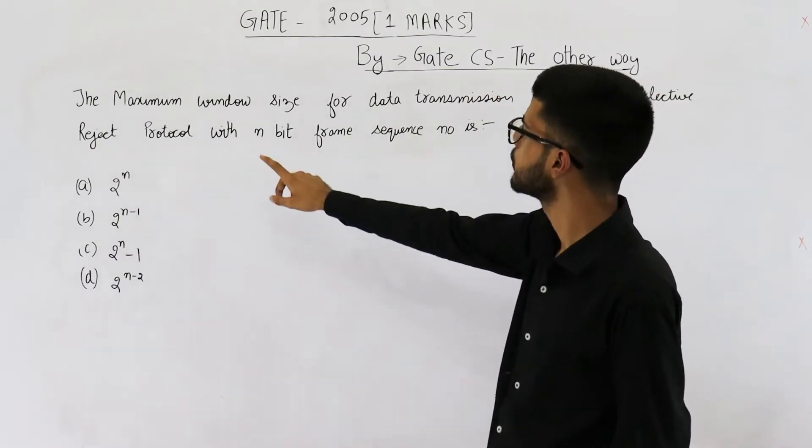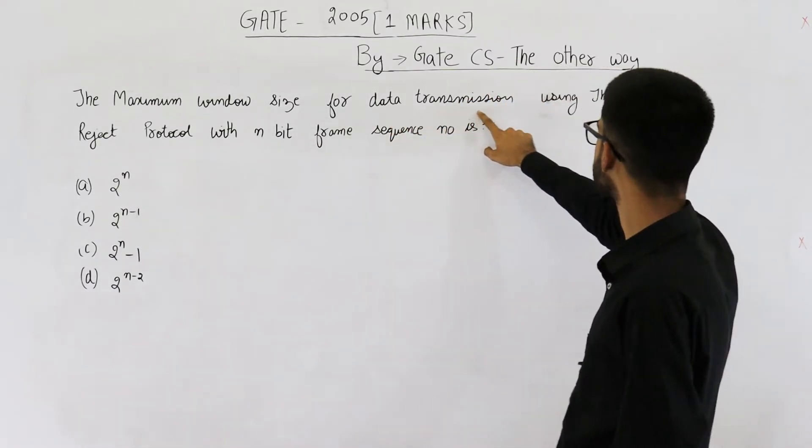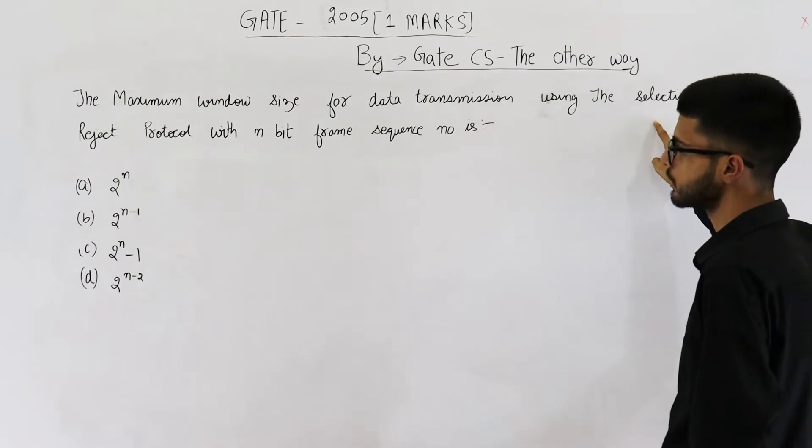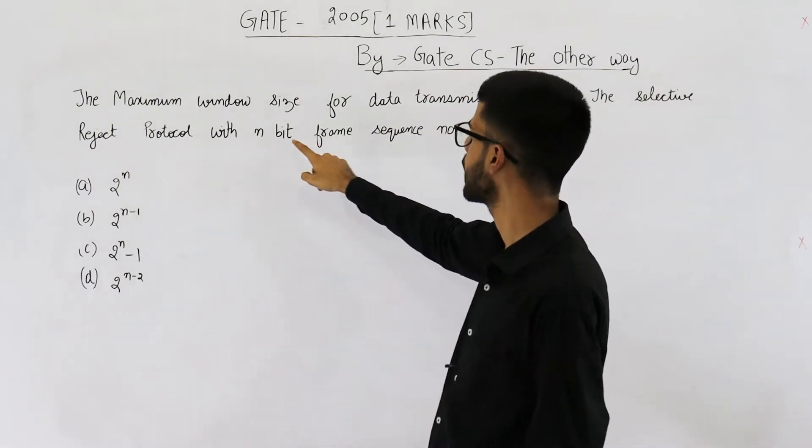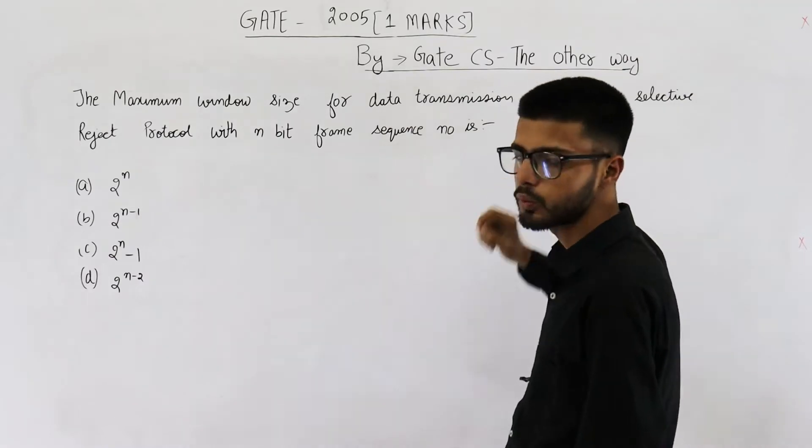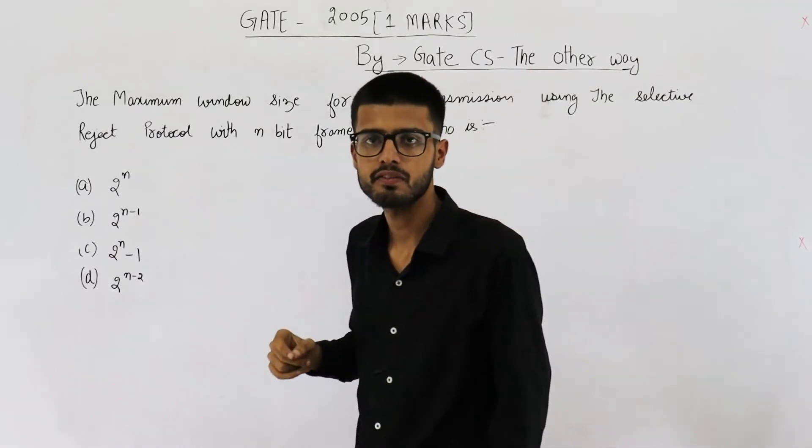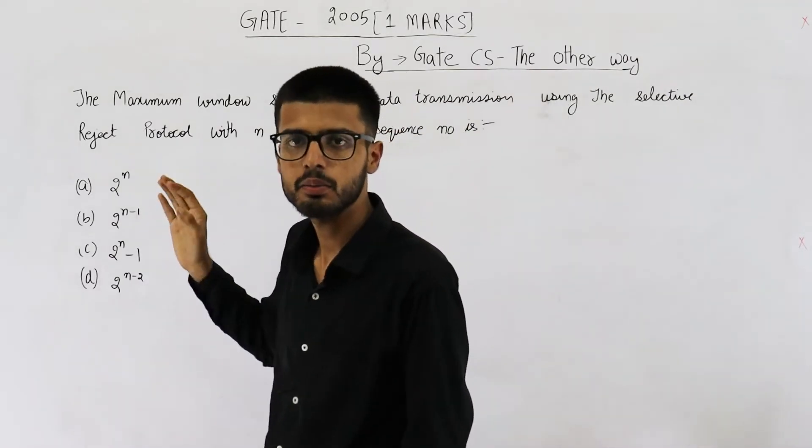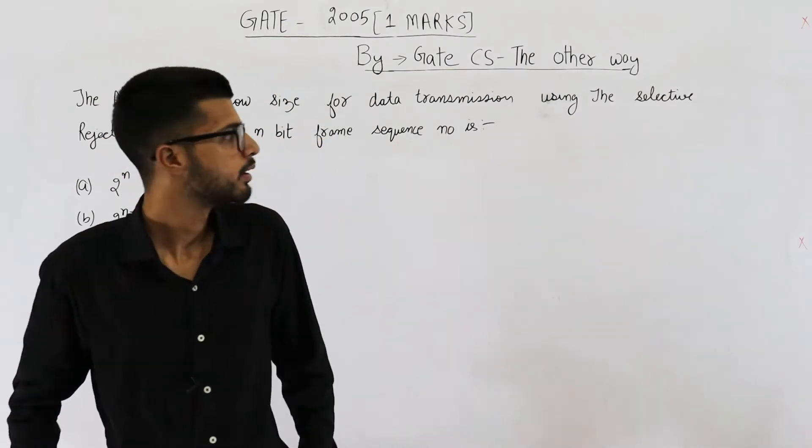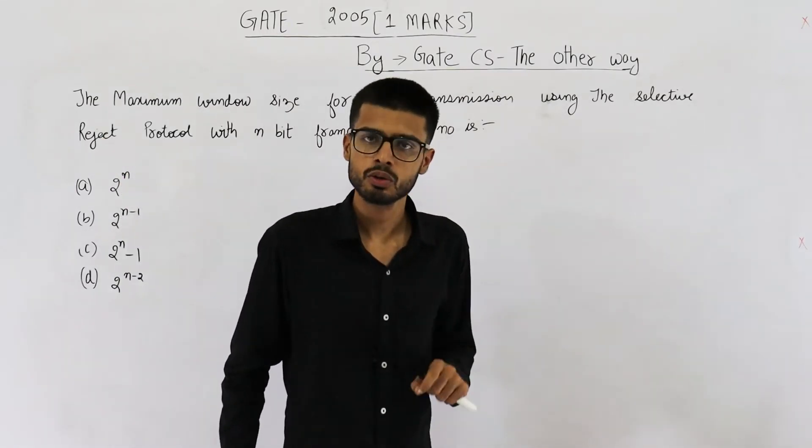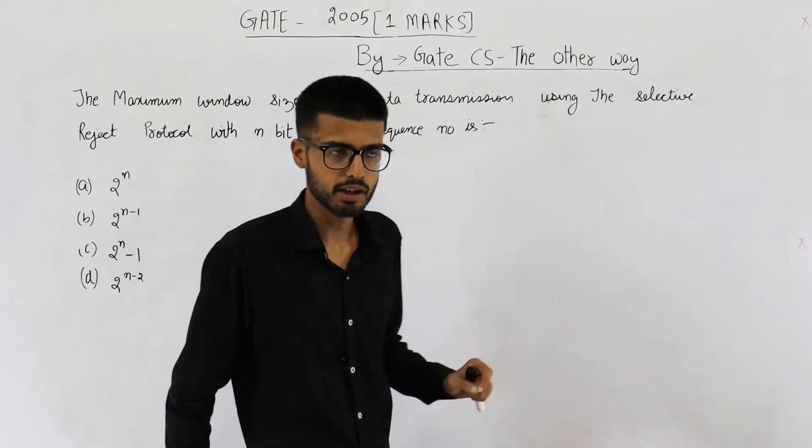They are saying maximum window size for data transmission using the selective reject protocol with n bit frame sequence number. So first point is what is this selective reject protocol? It's nothing but selective repeat protocol only. Selective repeat is also sometimes called selective reject.